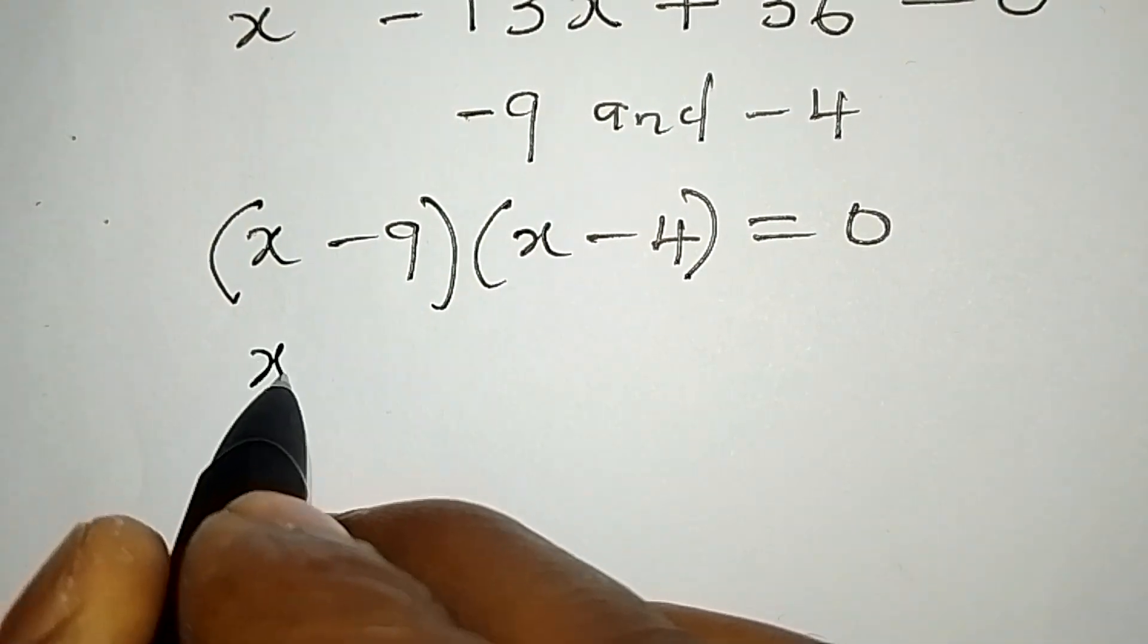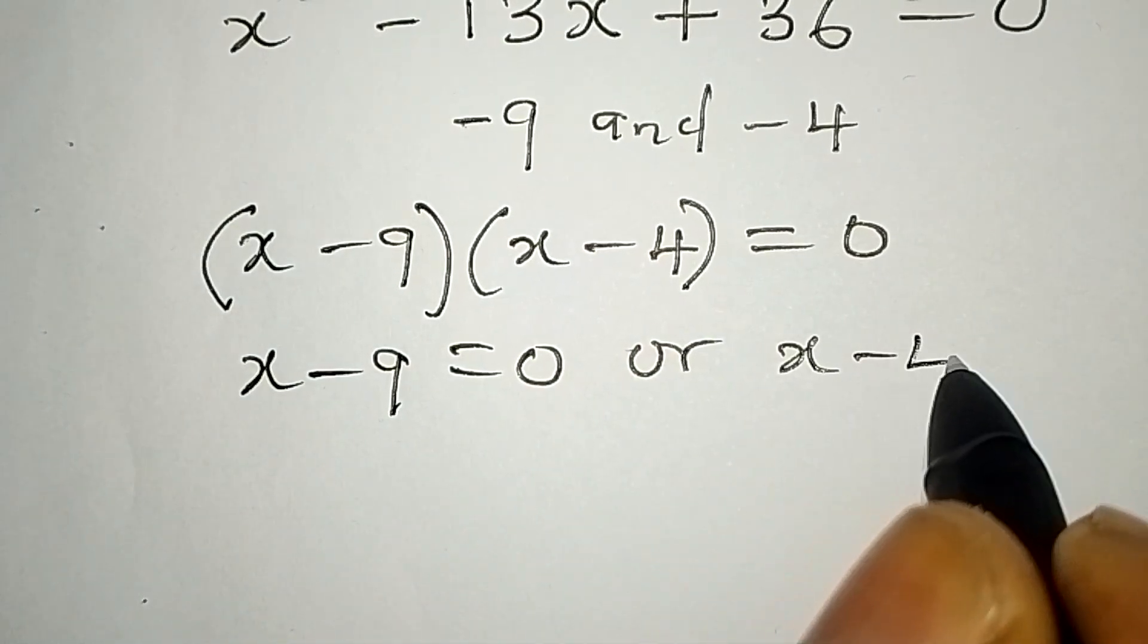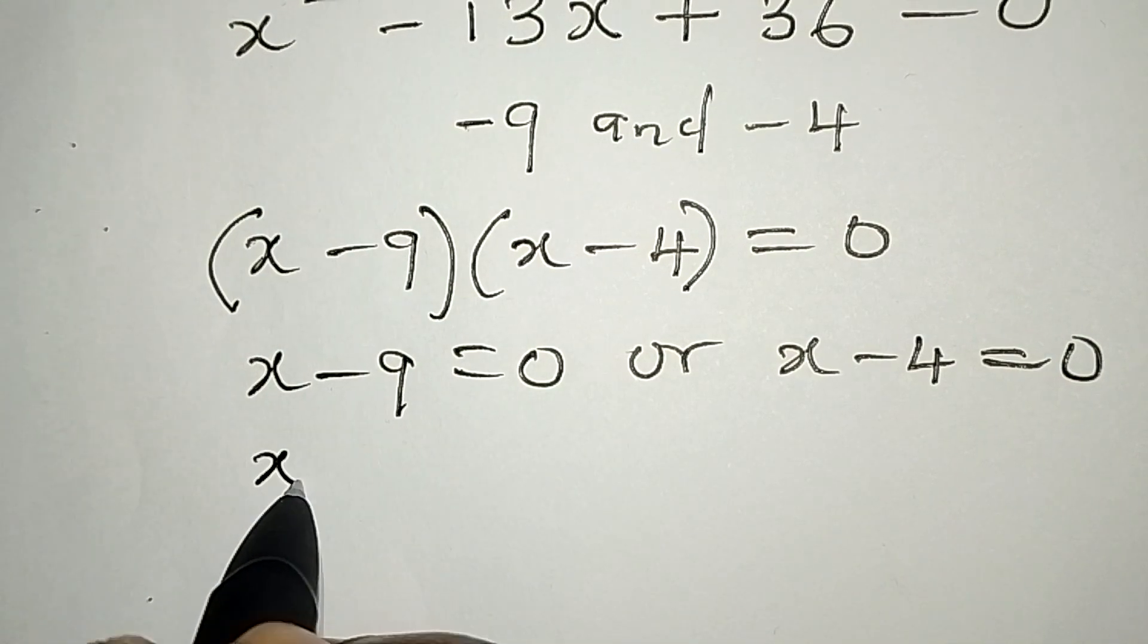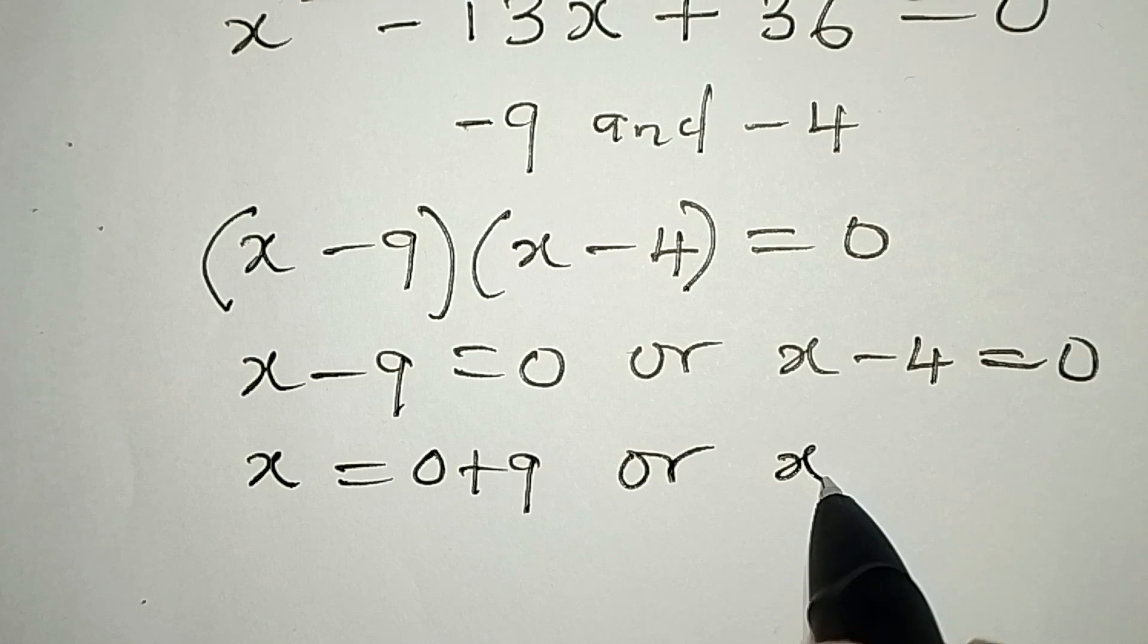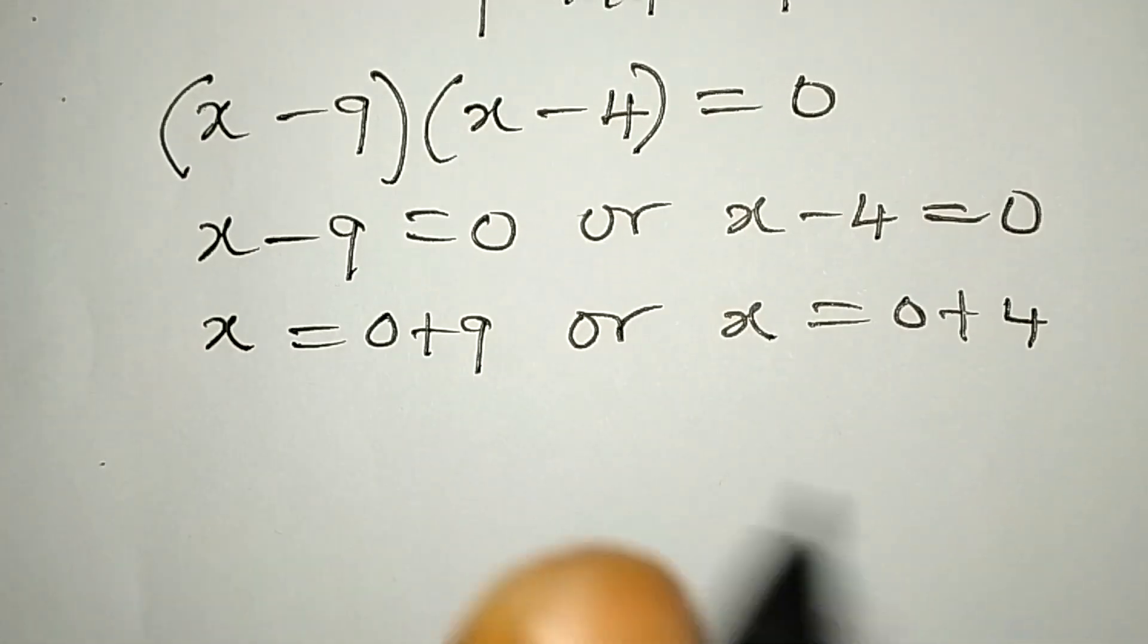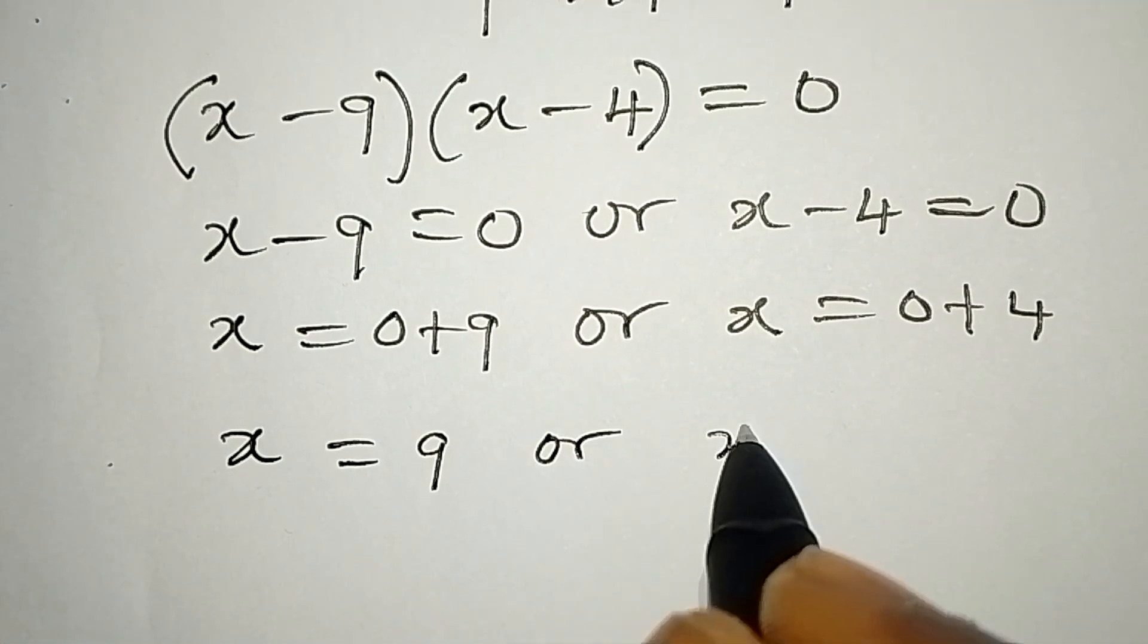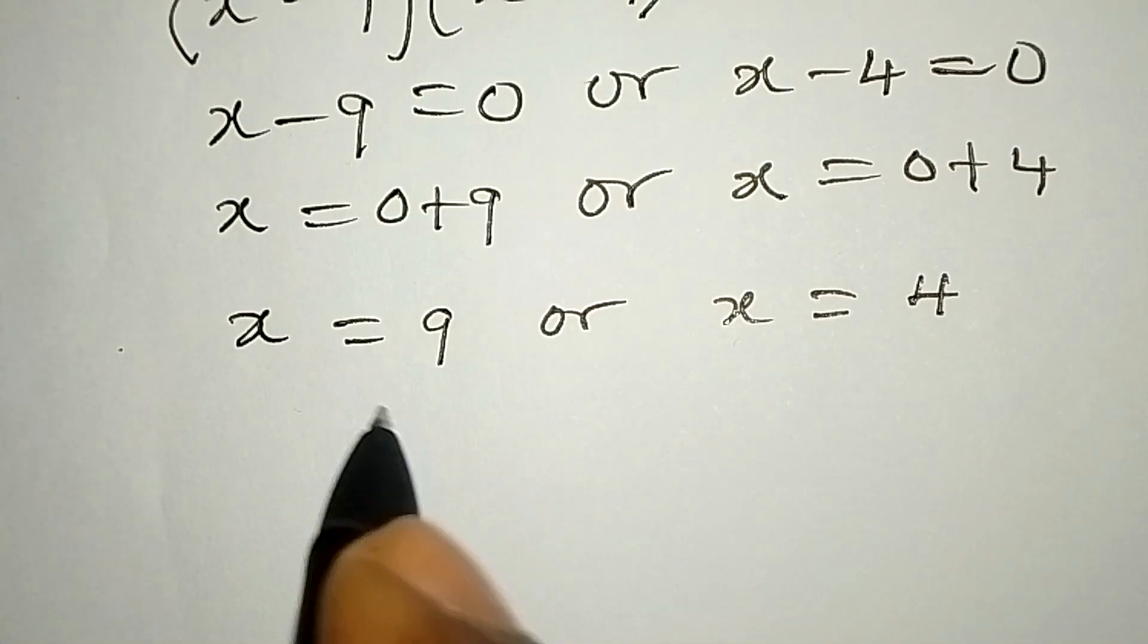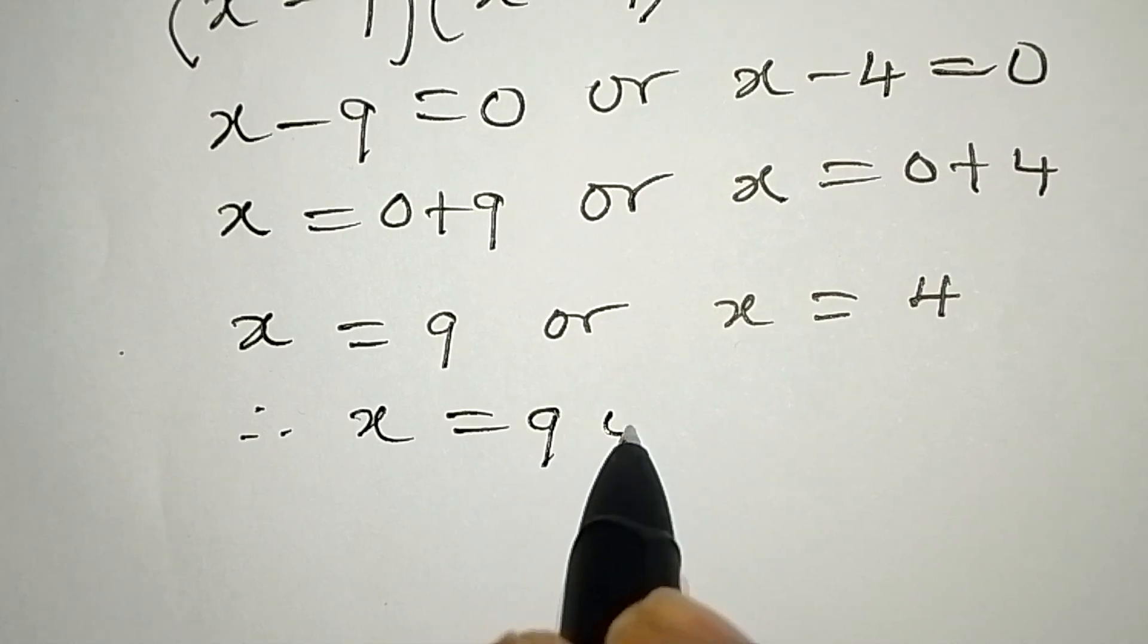Now x - 9 = 0 or x - 4 = 0, which means x = 9 or x = 4. Let's put the two solutions together. Therefore, x = 9 or 4.